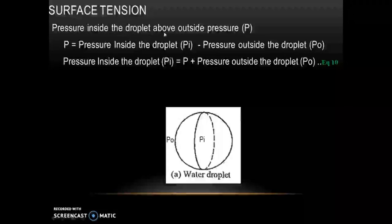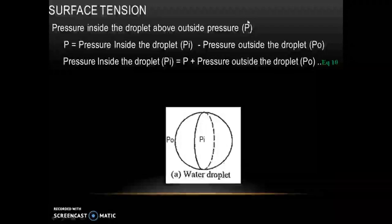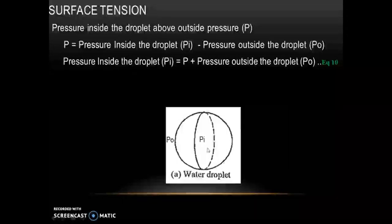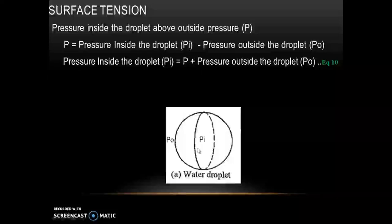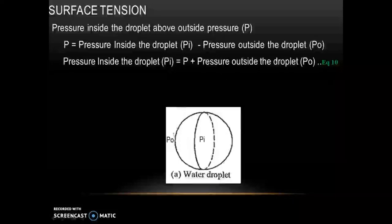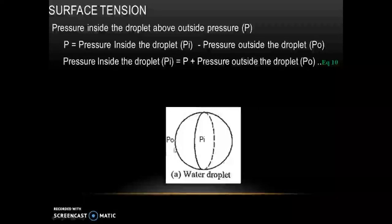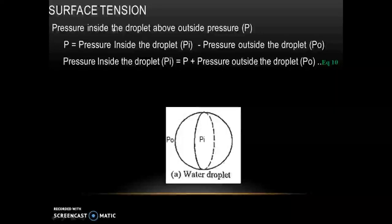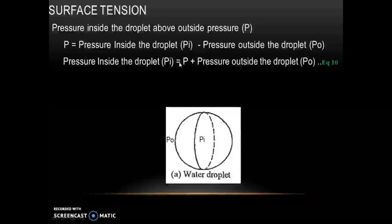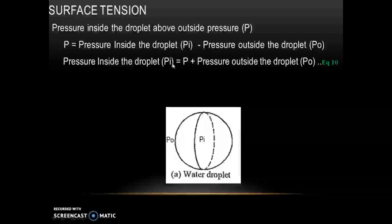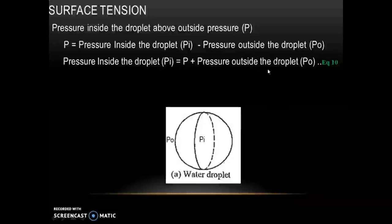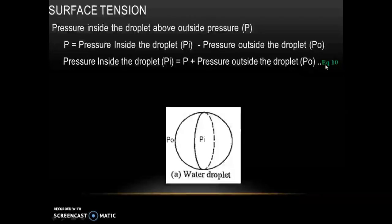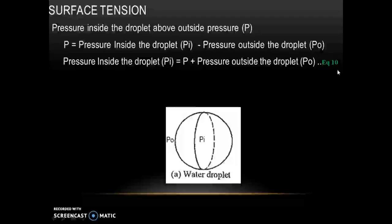Pressure inside the droplet above outside pressure is given by P, which equals pressure inside the droplet (Pi) minus pressure outside the droplet (P0). So if we want to find pressure inside the droplet, Pi equals P plus P0. This is equation 10.